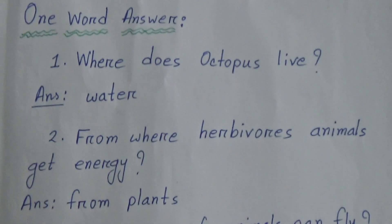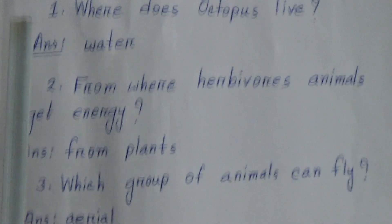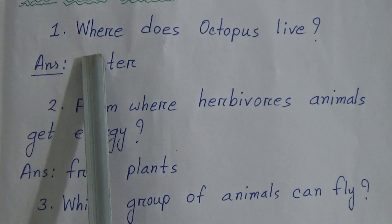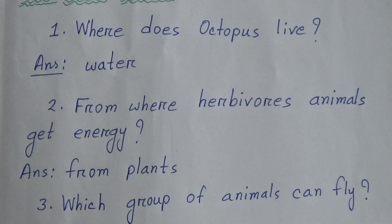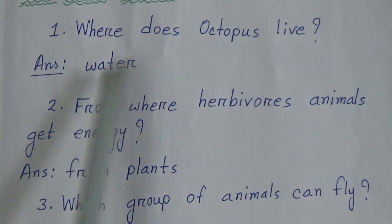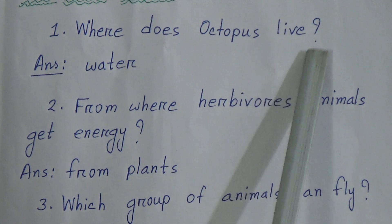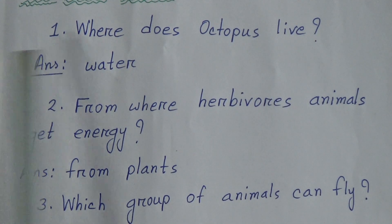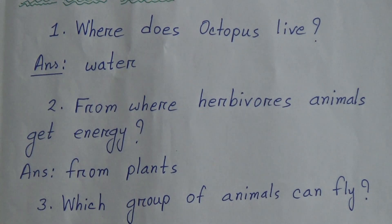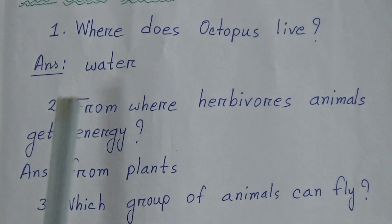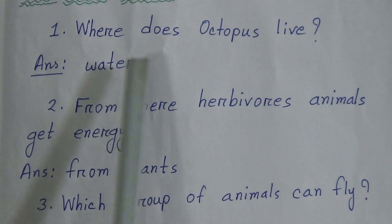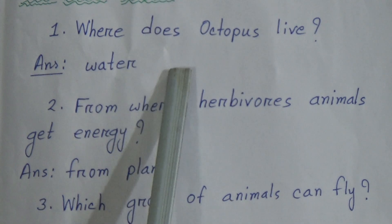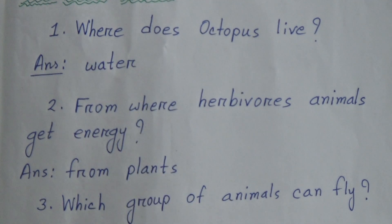Now, one-word answers. First one-word answer question: where does octopus live? Answer is water. Students, for one-word answers we will not use a full stop.